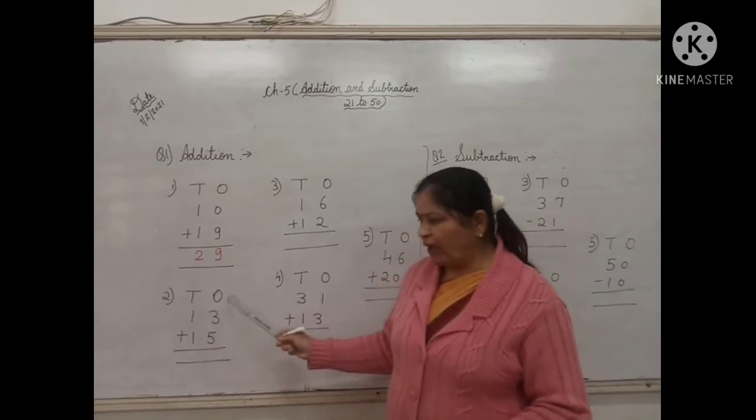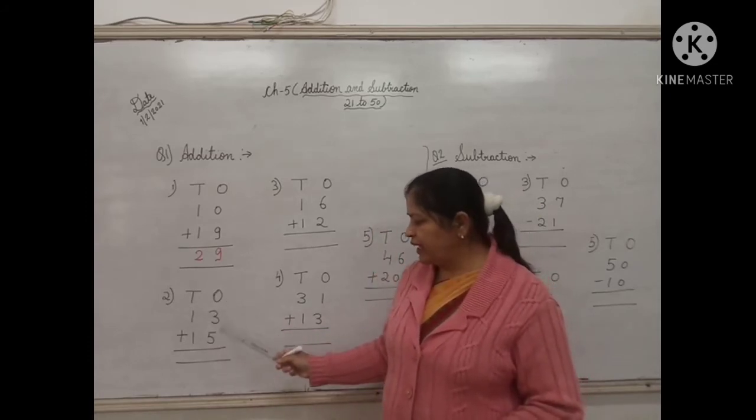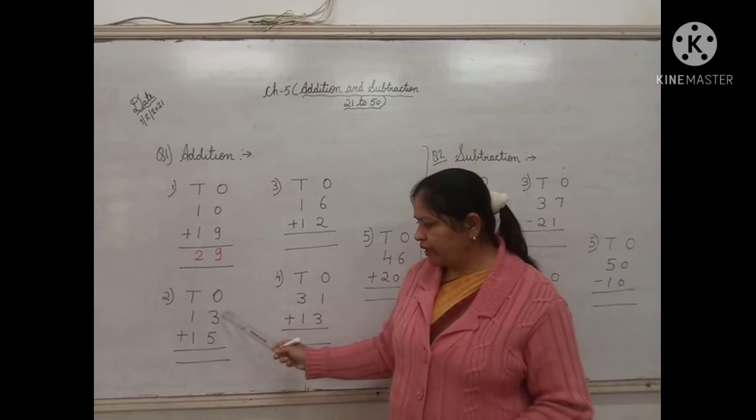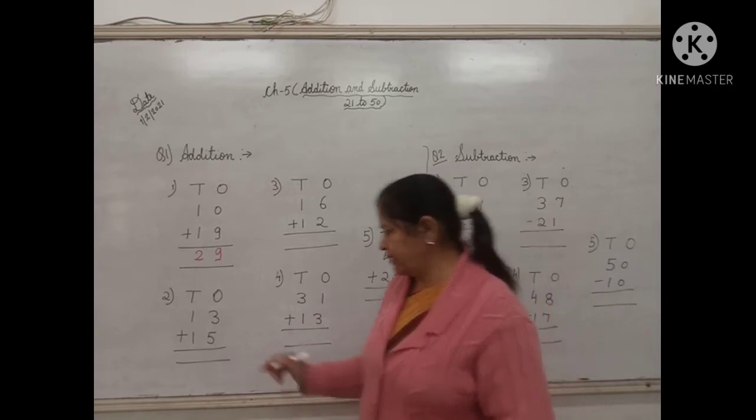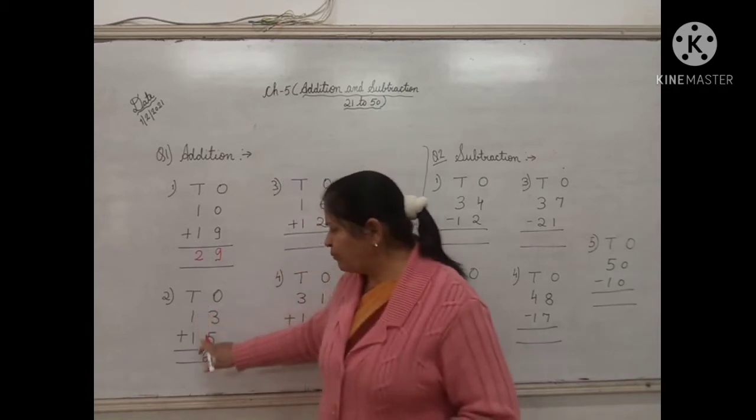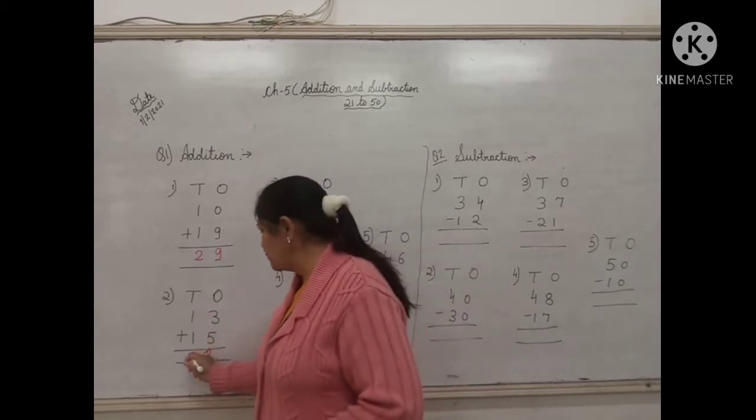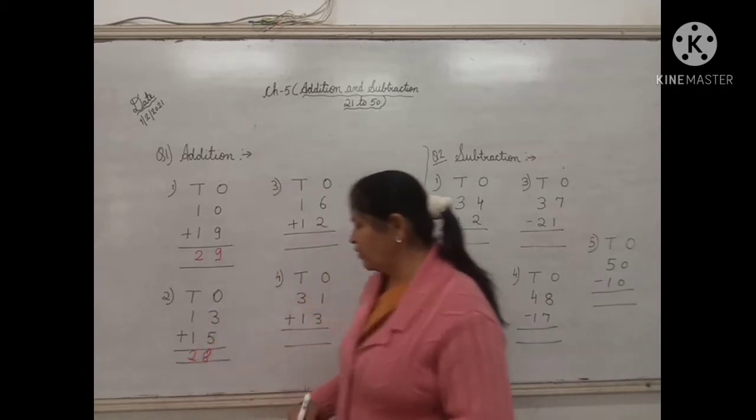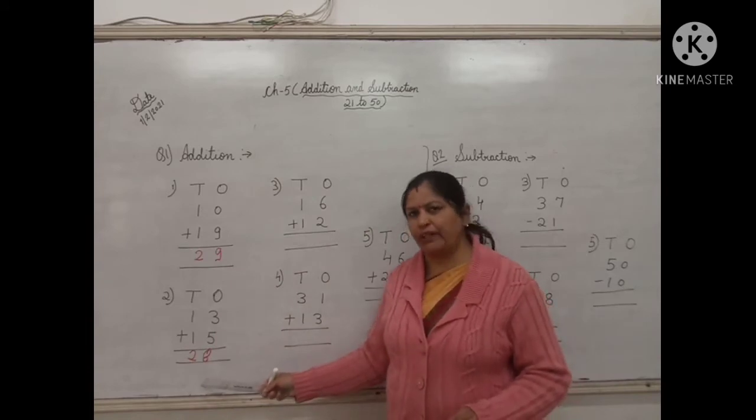Second one. In the ones digit, the number is 3 and 5. So children, 3 plus 5 is 8. So write down 8. 1 plus 1 is 2. So write down 2. What is the answer children? 28.